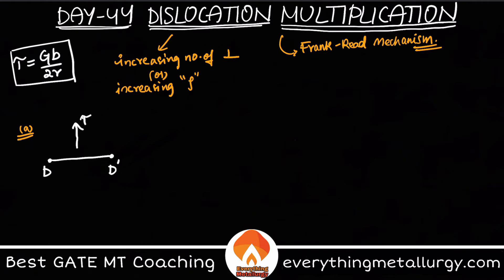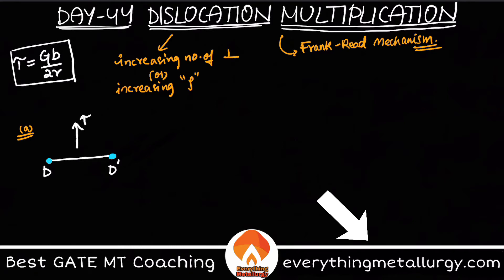Here r is the radius to which I am trying to bend my dislocation. The two points D and D' are anchored on the slip plane — meaning these points cannot move out of the slip plane because of some obstacles. But the dislocation line between D and D' will try to come out of the plane.